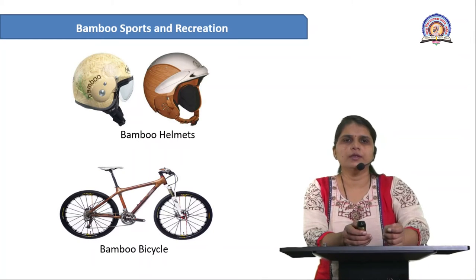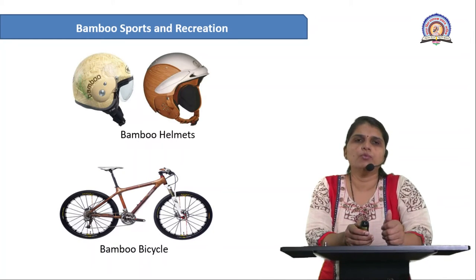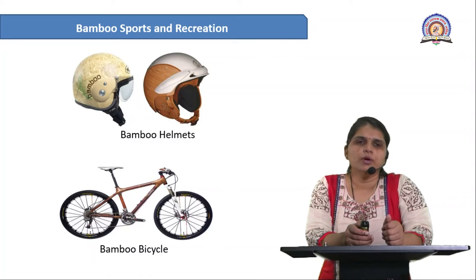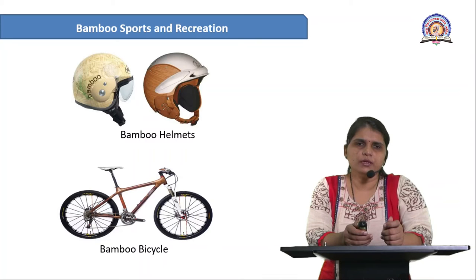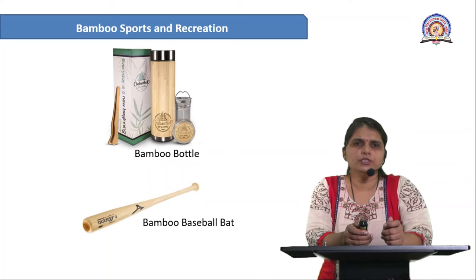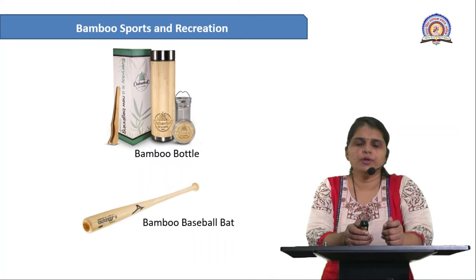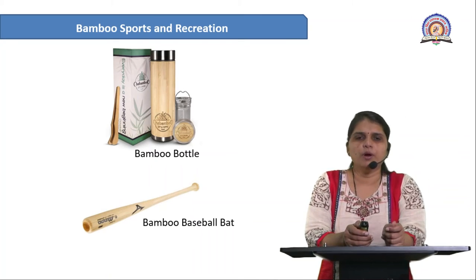Another important product of bamboo is bamboo sports and recreation items. These include bamboo helmets and bamboo bicycles. Also included are bamboo sports bottles and bamboo baseball bats, which are very strong.